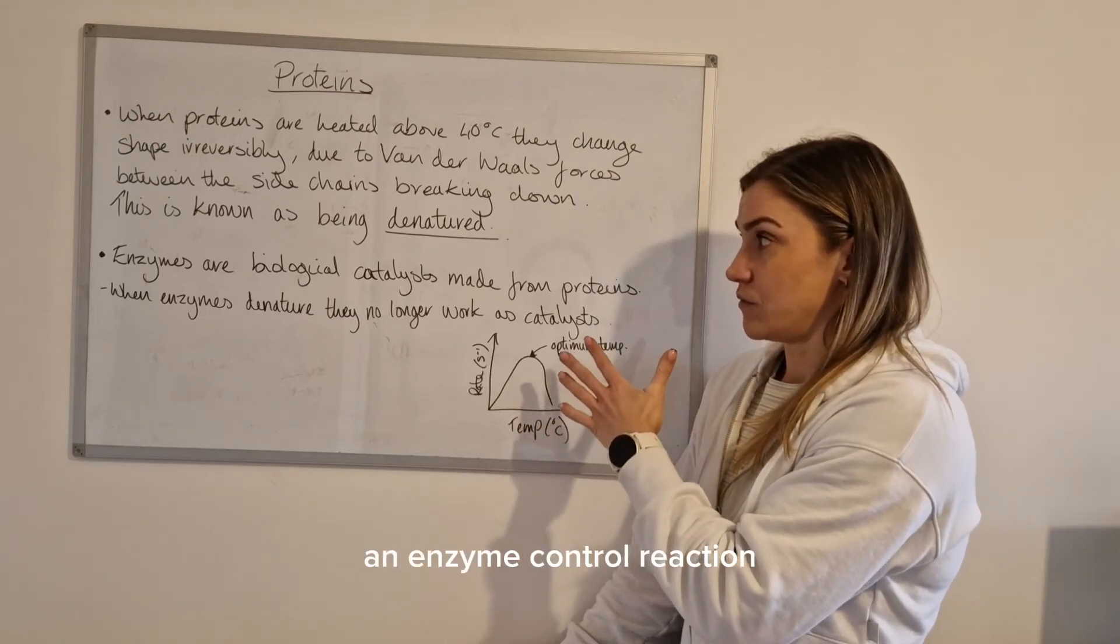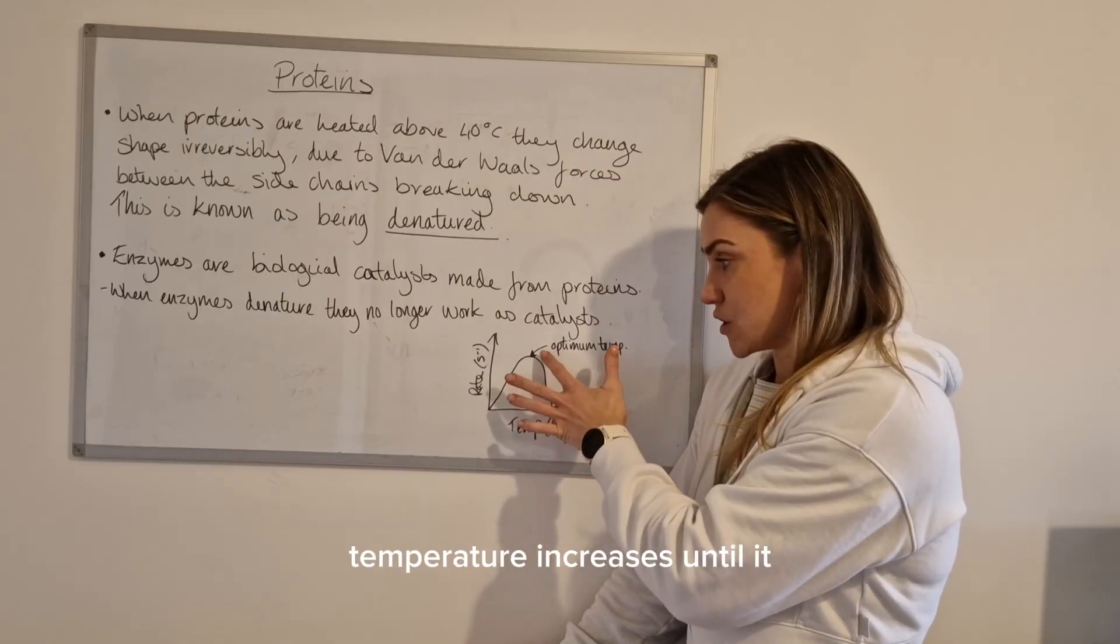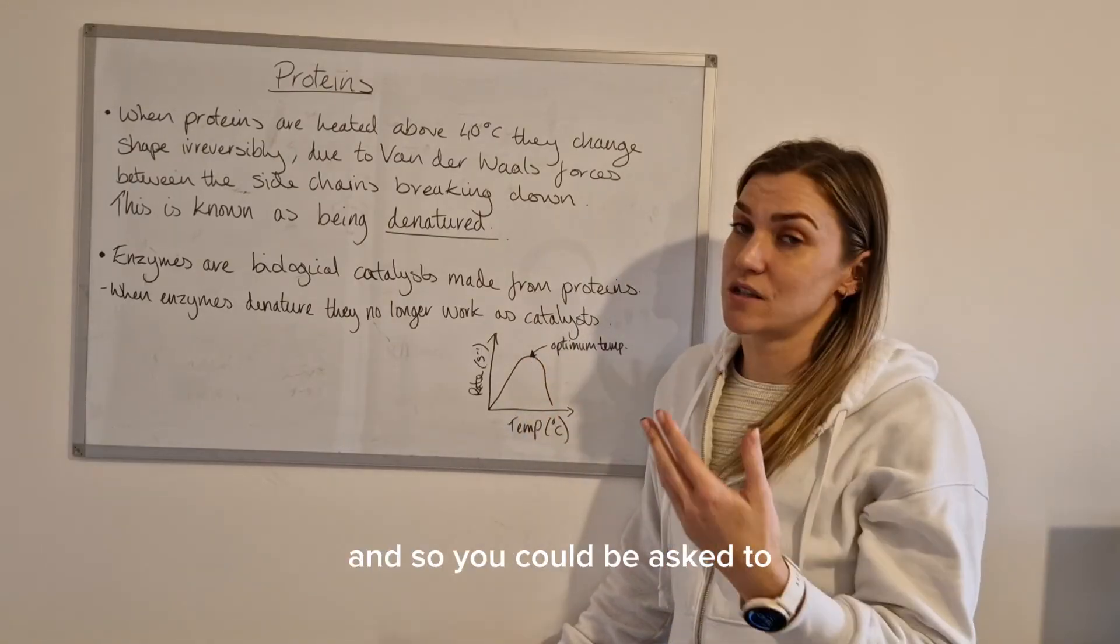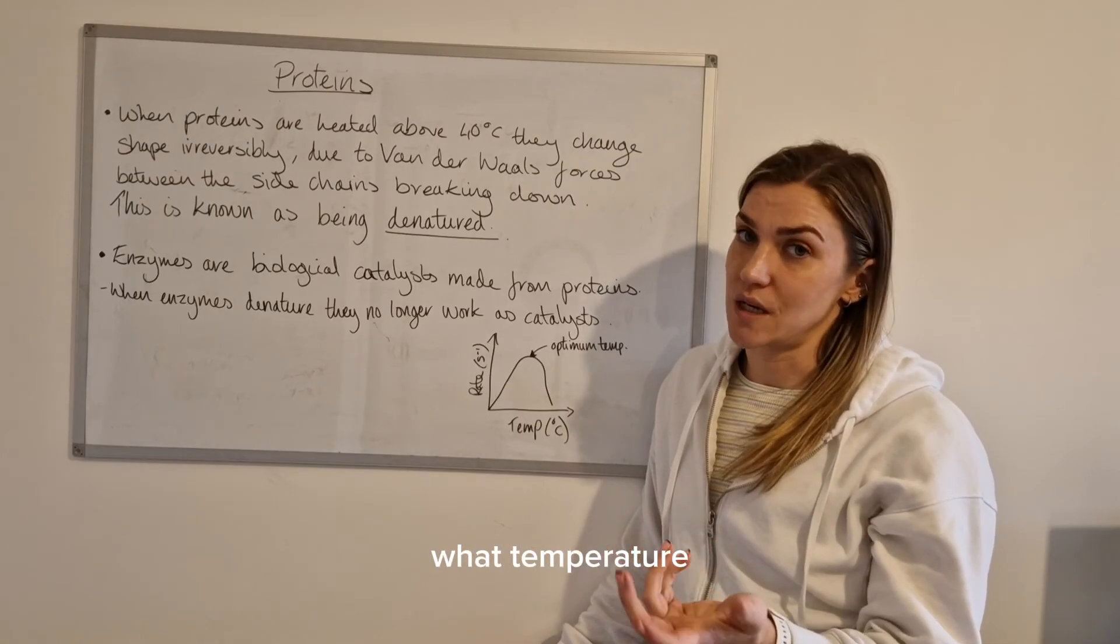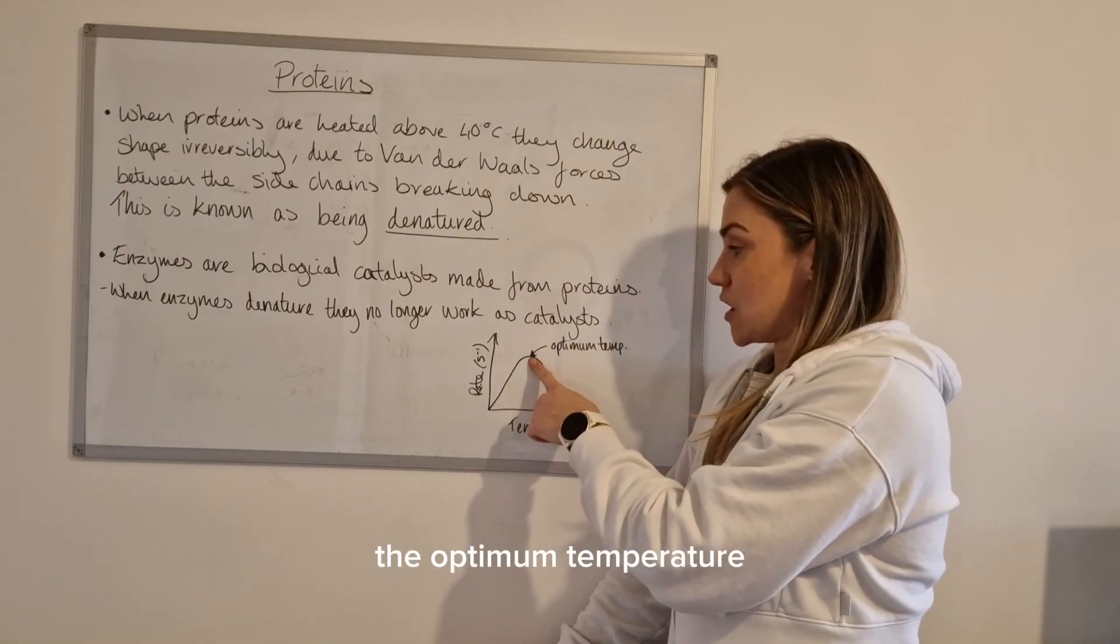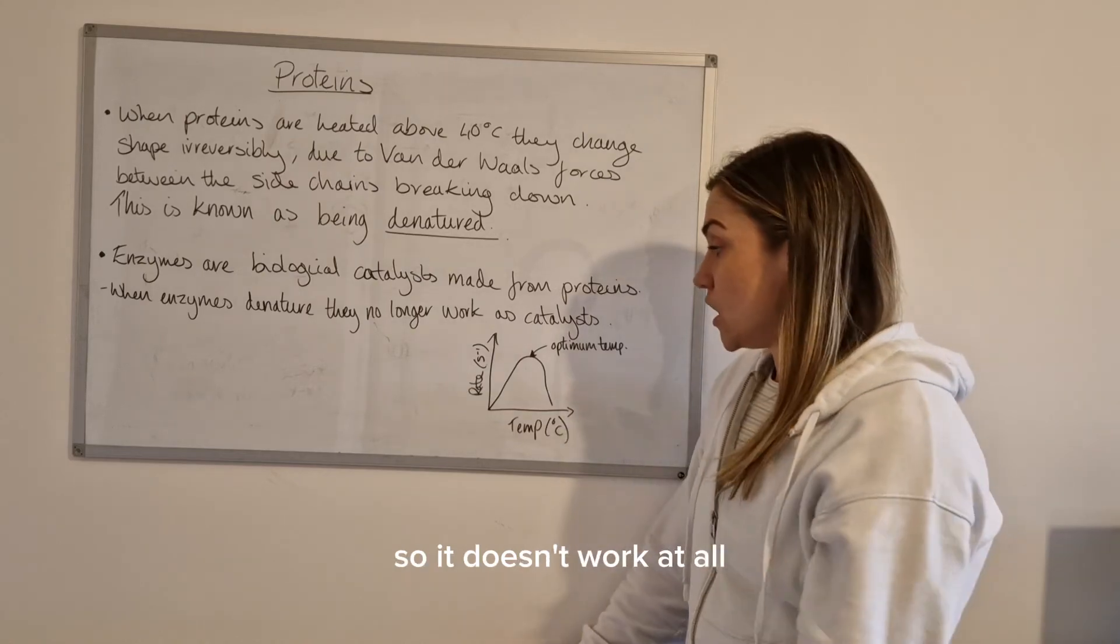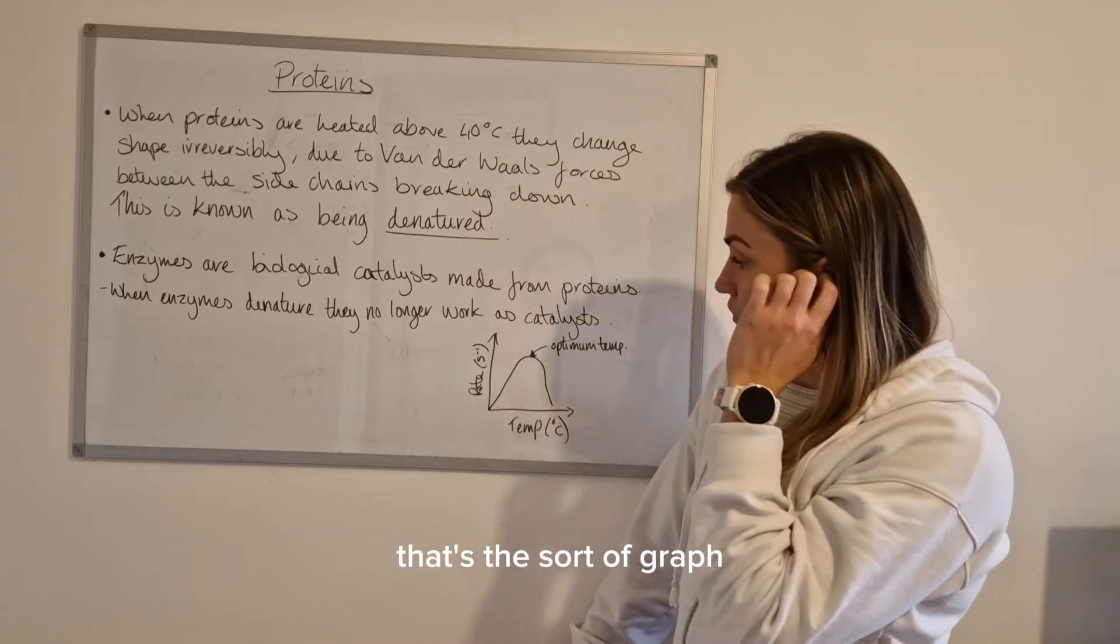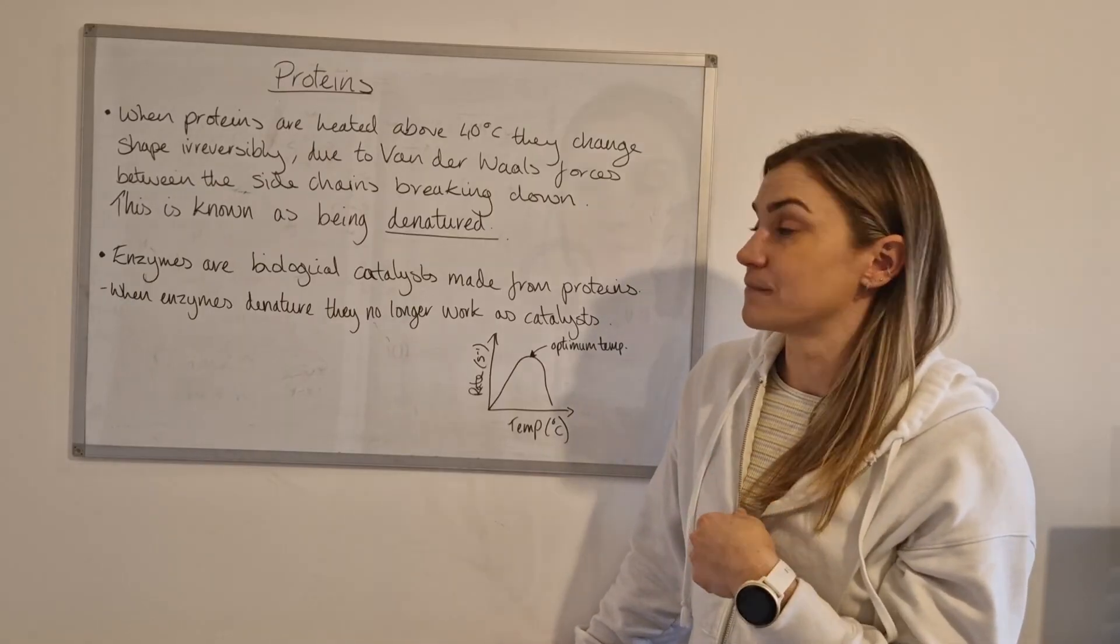A rate graph for an enzyme controlled reaction will look like this. So the rate will increase as temperature increases until it gets to an optimum. Now that optimum temperature is different for each enzyme and so you could be asked to produce a graph that shows where that optimum is but they'll tell you in the question what temperature the optimum occurs at. So that's just where you would make the peak of your graph. So it'll increase up to the optimum temperature and then after that it takes a big steep drop off because then that's it become denatured so it doesn't work at all. So there's no like gradual decline, it's just a sheer drop. Okay so that's the sort of graph you'll get for an enzyme controlled reaction or reaction that involves an enzyme.